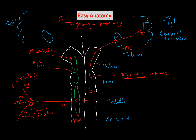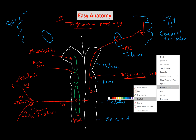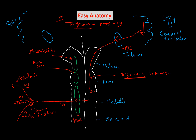Now let's talk about touch. Touch coming from the nerves goes to the main sensory nucleus. From the main sensory nucleus, it crosses to the opposite side and follows the trigeminal thalamic tract, again reaching the thalamus. From the thalamus, the third-order neuron continues. So this is the touch pathway, and this is the pain and temperature pathway.